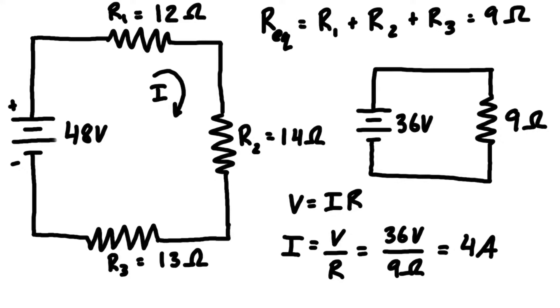We have to update our equivalent resistance, so 12 plus 14 plus 13 is 39 ohms. Then we can update everything in here as well.